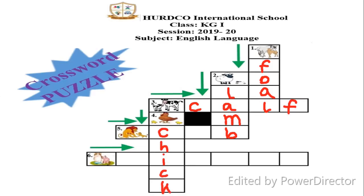Picture number five is a lion with his baby. A lion's baby is called cub, and the arrow is pointing rightwards. The C from cub is already written, so we write the next letter U. The B from cub is also already written, so we don't have to write it anymore.